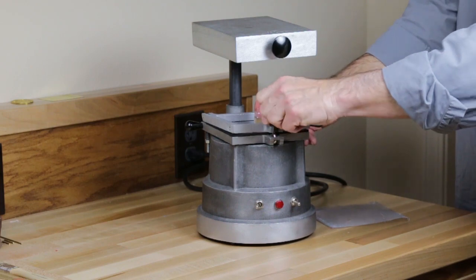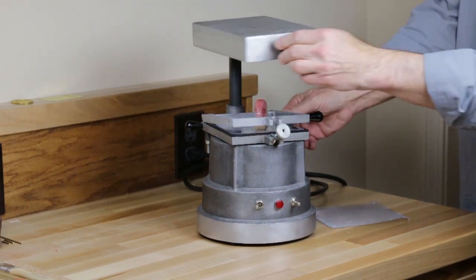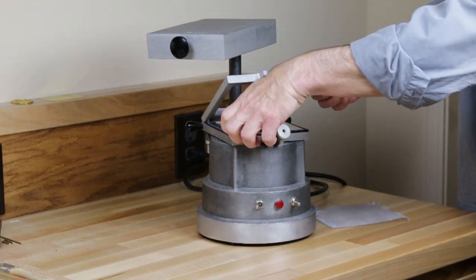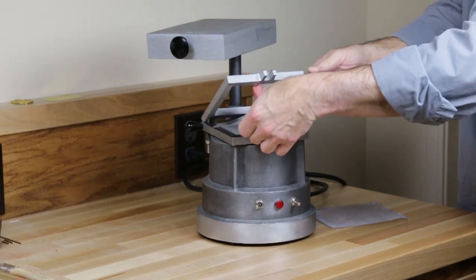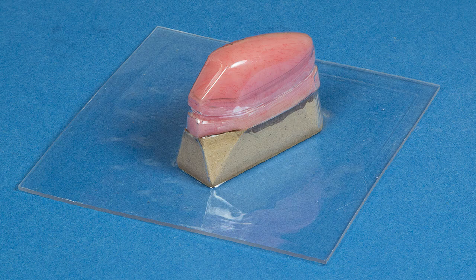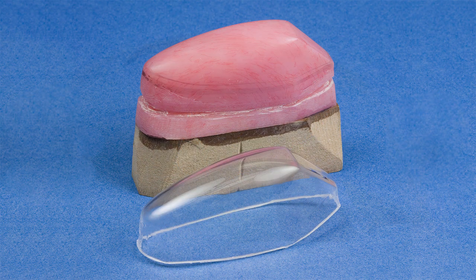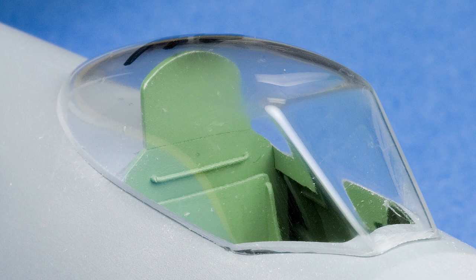Once cool, the material is removed from the frame. The material is then separated from the form. The canopy is then trimmed to fit.